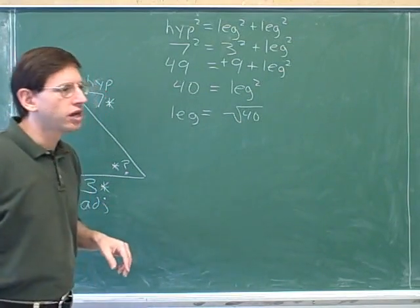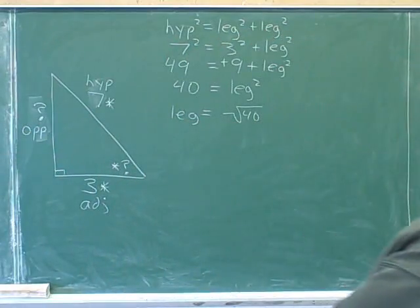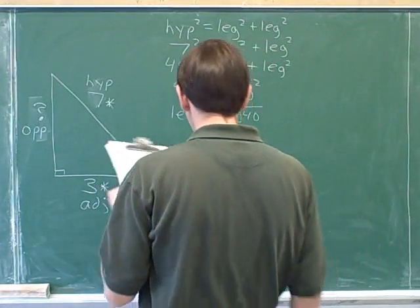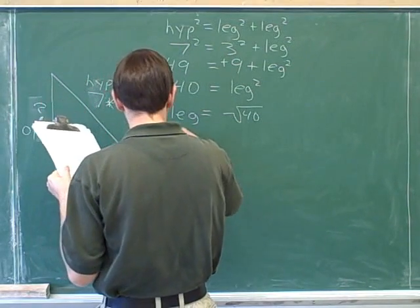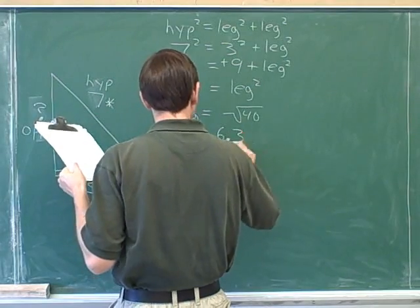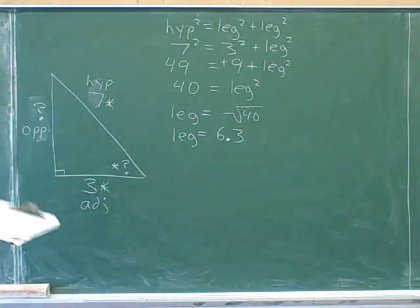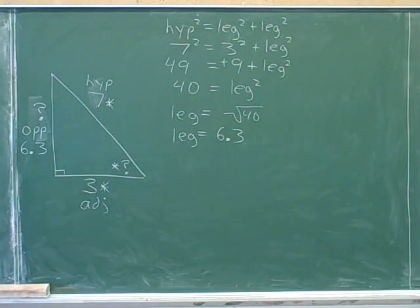So you could say that the leg is square root of 40, or maybe it's better to get a decimal answer. So you can use your calculator to find the square root of 40. According to my notes, that will come out to be approximately 6.3. So the leg is approximately 6.3. And now we can build that information into our sketch.